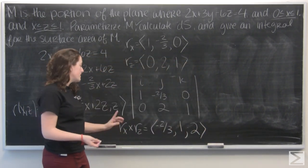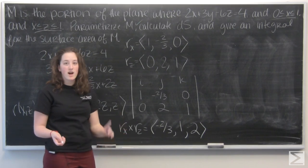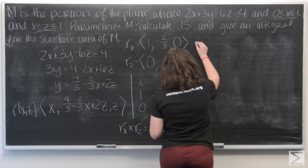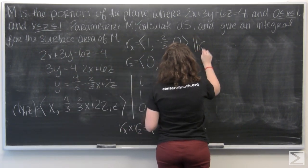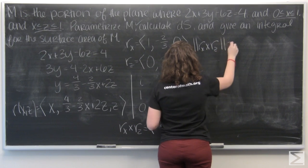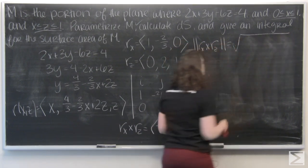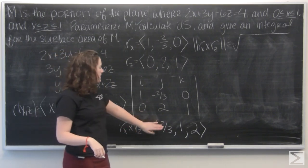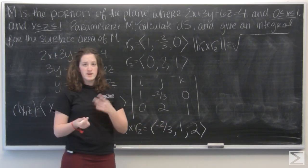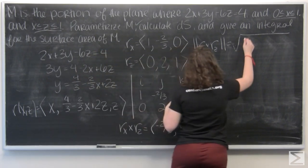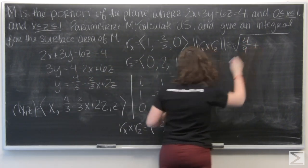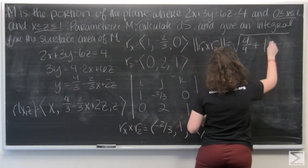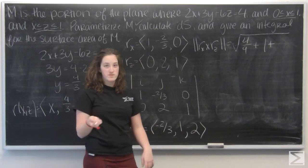Now ds is going to be the magnitude of this cross product times dx and dz. So let's go ahead and find that magnitude. So I'm going to have the square root of each of the terms squared. So negative 2 thirds becomes 4 ninths. 1, obviously it's still 1. And 2 squared gives me 4.